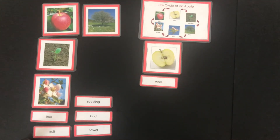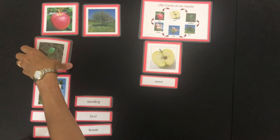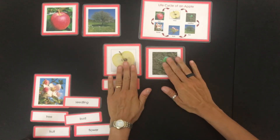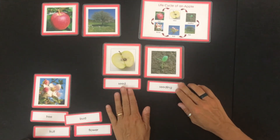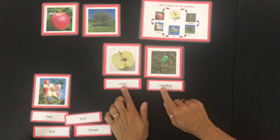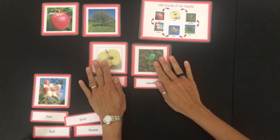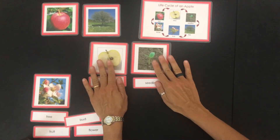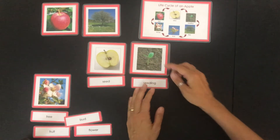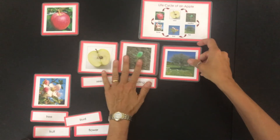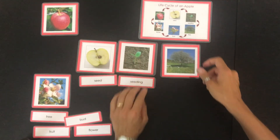Then what happens next? The seed sprouts and there's a seedling. Seed and seedling have the same root word: seed, and then you've got the -ling at the end. And then what happens? Then the seedling grows and grows and grows into a big full-grown apple tree. That's the tree.